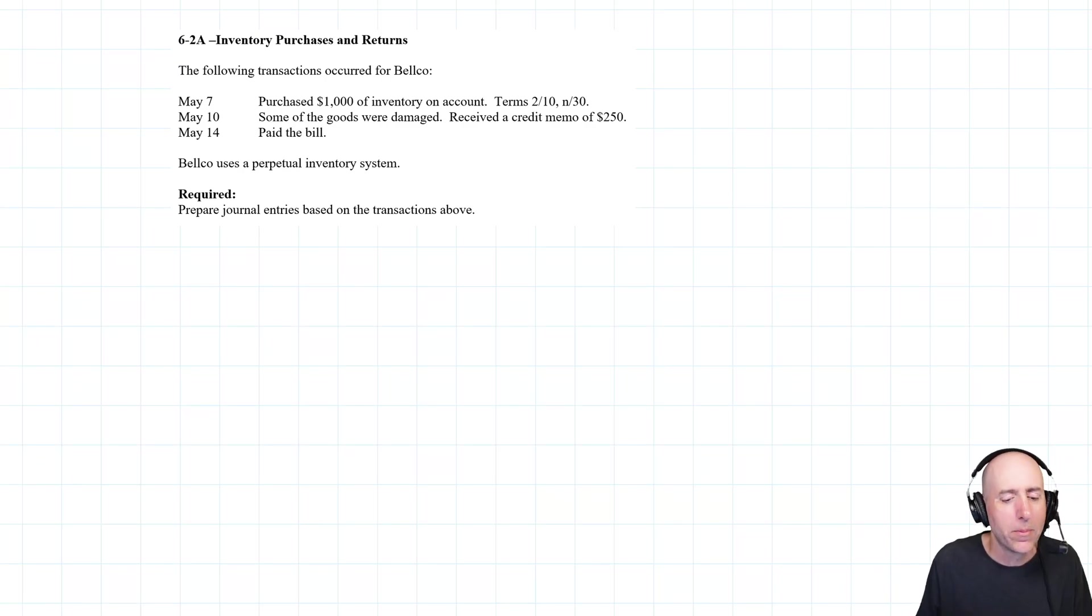Let's jump into problem 6.2a. This has us doing inventory purchases, and there's going to be a discount element to this. You'll remember at this point terms 2/10 net 30 means if we pay within 10 days, we get to take a 2% discount.